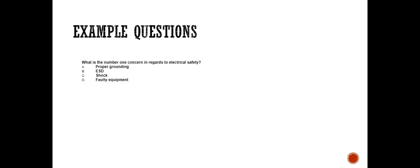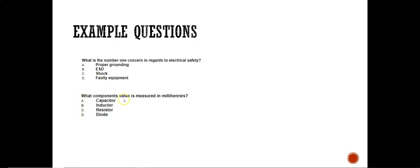Now let's see some example problems from the CET examination. First question: what is the number one concern in regards to electrical safety? You have four options: proper grounding, ESD electrostatic discharge, shock, and faulty equipment. In my view, the number one concern is shock, so C is the correct answer.